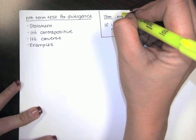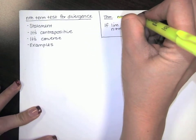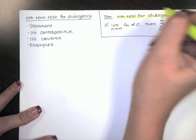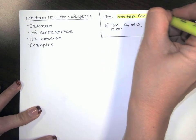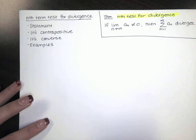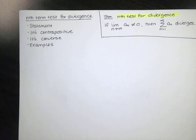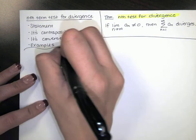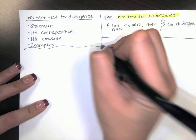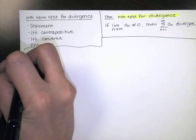We call this the nth term test for divergence because it only tells us one thing: it tells us when a series diverges. It does not tell us anything about convergence. So let's look at a particular example.